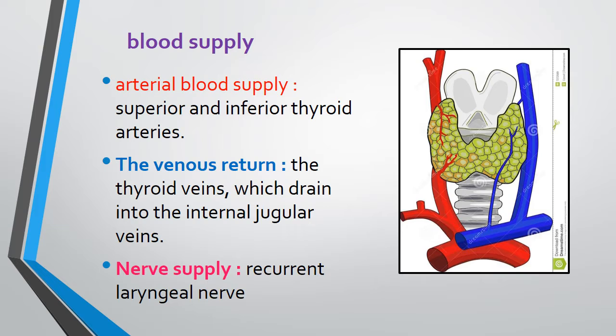Now, the blood supply of the thyroid gland. The arterial blood supply comes from the superior and inferior thyroid arteries, and venous drainage is via the thyroid veins which drain into the internal jugular veins. The nerve supply is the recurrent laryngeal nerve.